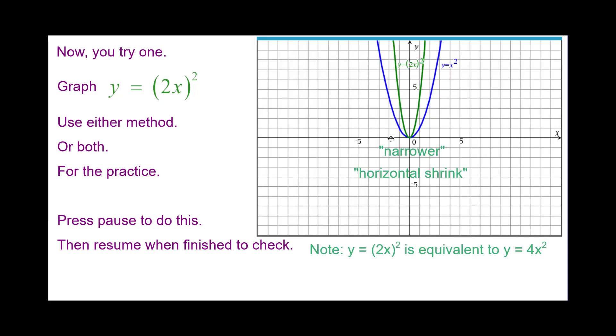And here is that answer. Notice the green graph is narrower. This is an example of a horizontal shrink. And that these are equivalent.